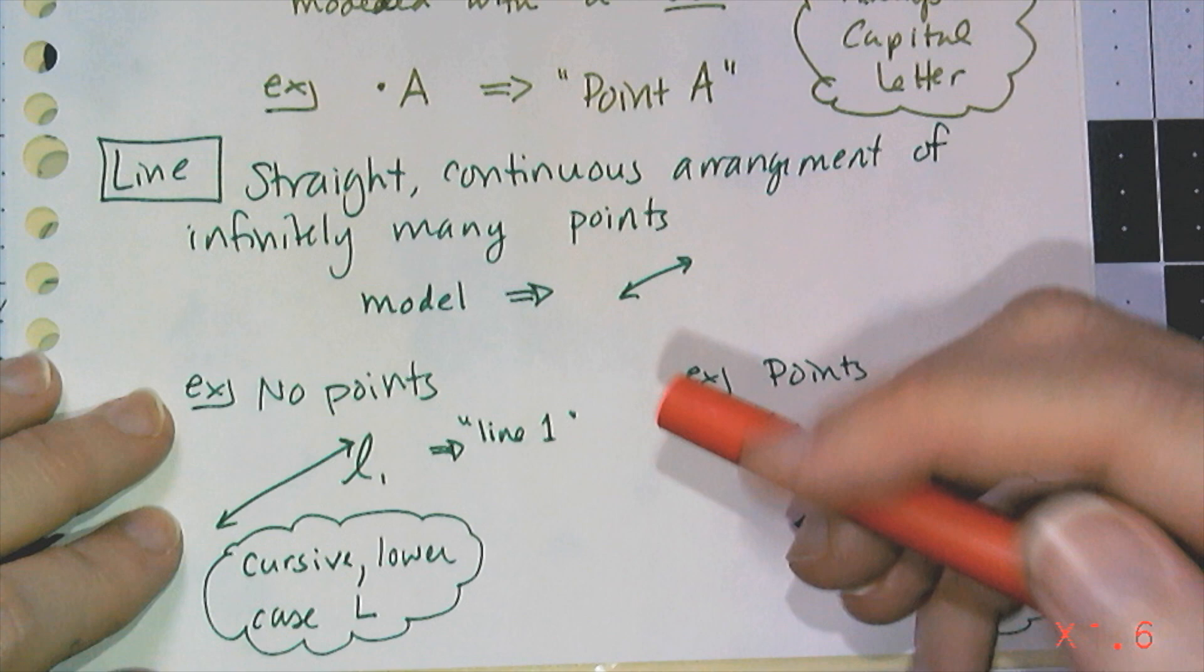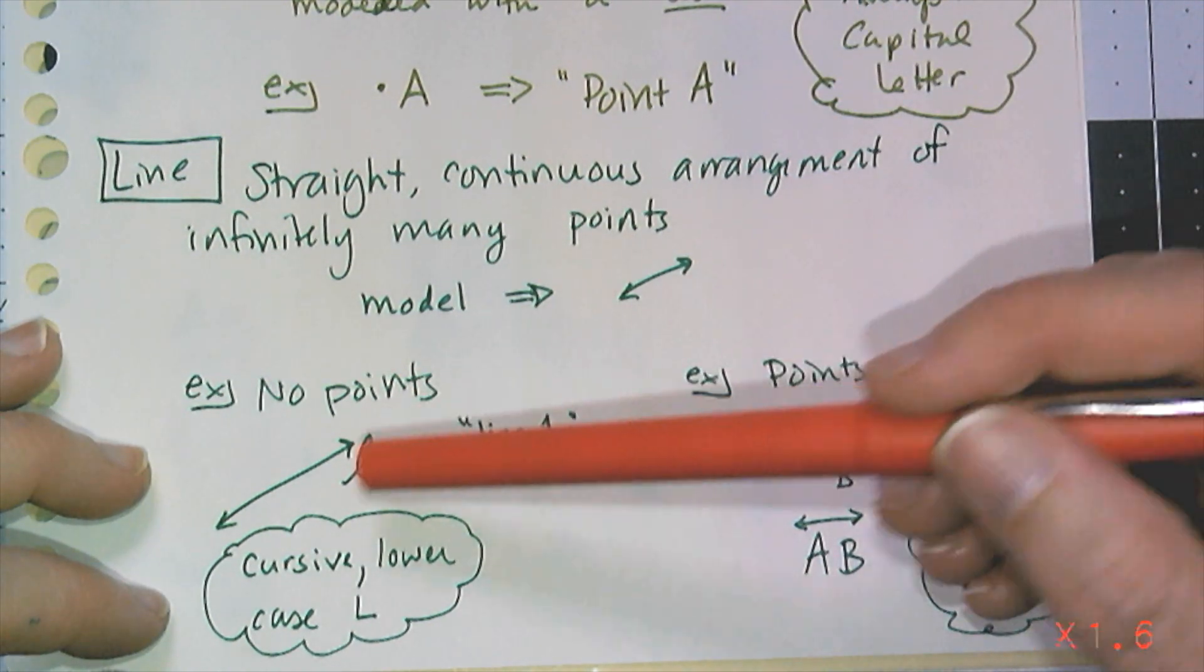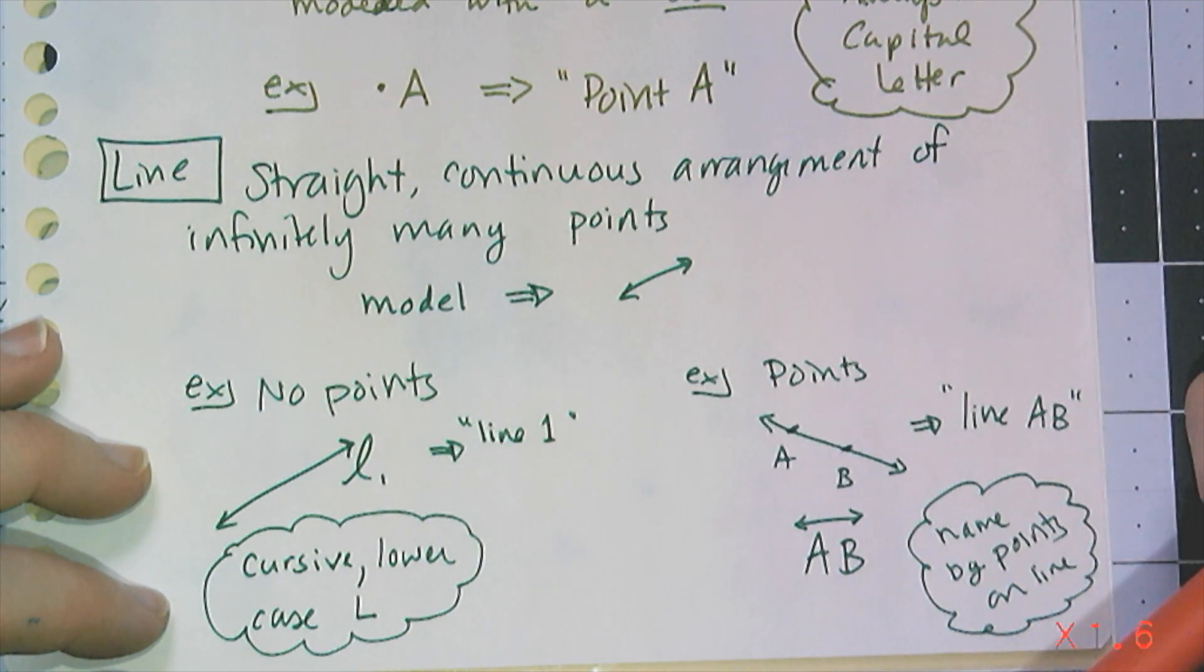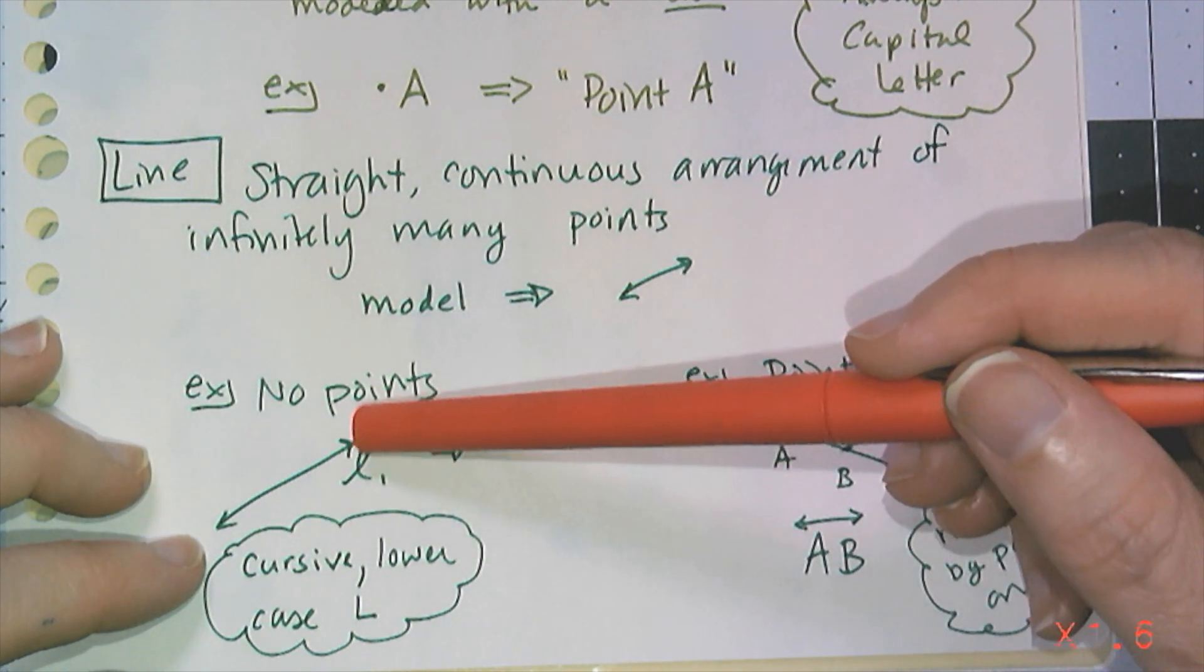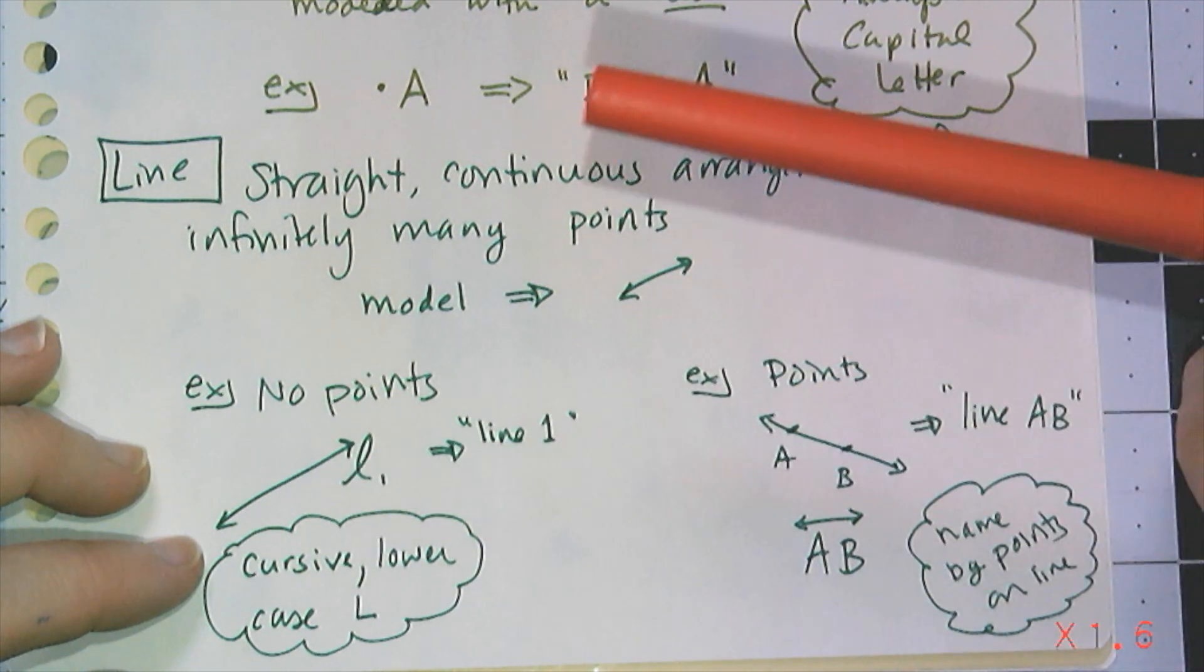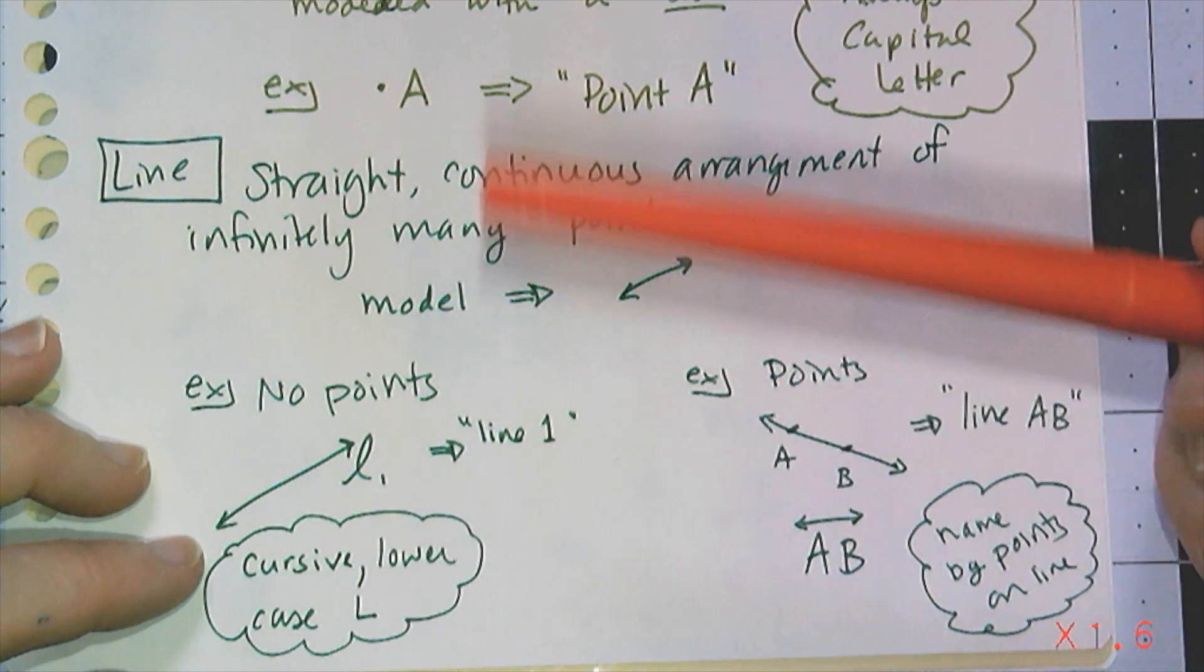If there are no named points on the line, we often use a cursive lowercase l with a subscript to indicate more than one line. So this is a picture of line one. If I have two lines, I can make the second one line subscript two, line subscript three, and so on.